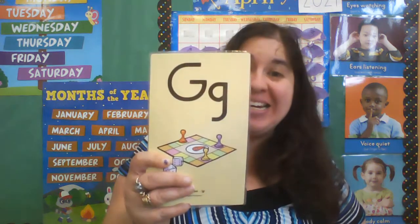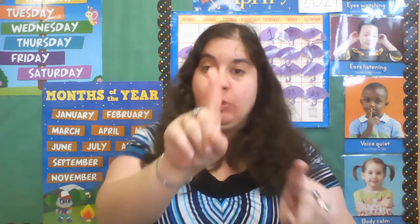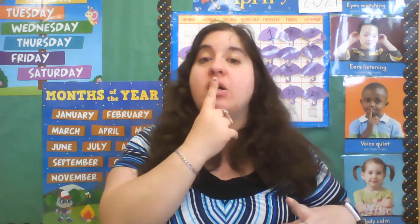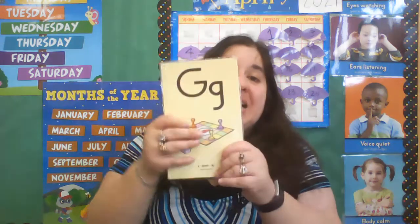Hi everyone, it's Miss Sarah and we're gonna do some foundations writing today with the capital letter G. But first, let's go over our rules. Rule number one: eyes are watching. Rule number two: ears are listening. Rule number three: voices are quiet. Rule number four: body is calm.